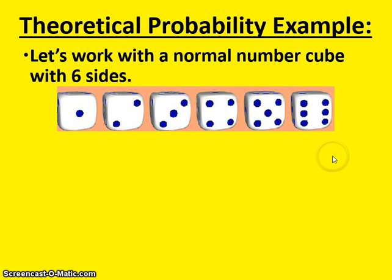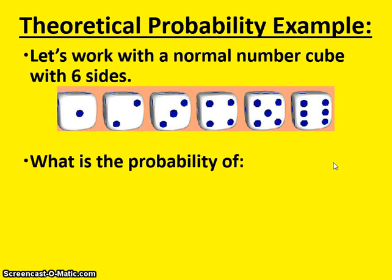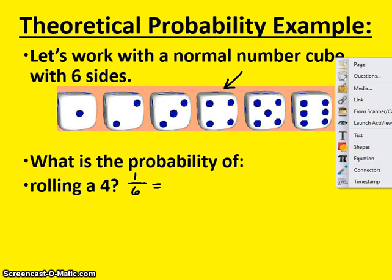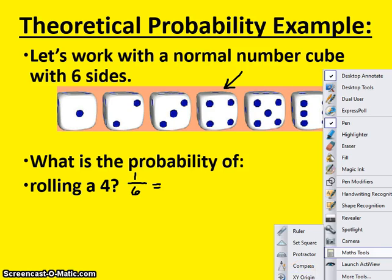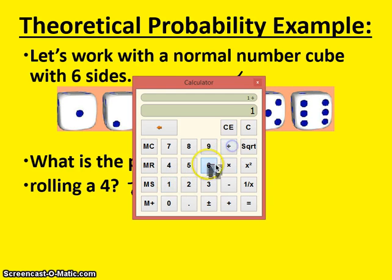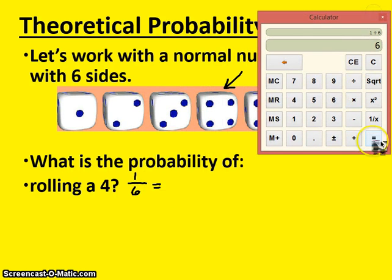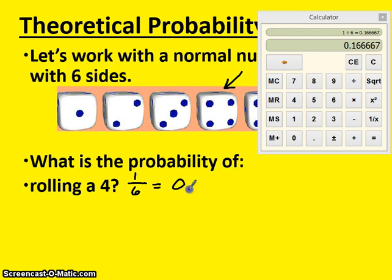Let's look at some examples that deal with a normal number cube with six sides. So what is the probability of rolling a 4? Well, how many ways can you get a 4 with a dice? There's only one number 4, so that's 1 out of 6. You can divide 1 by 6 to get a decimal. So 1 divided by 6 is 0.166 or 0.17. So it would be about a 17% chance of you rolling a 4.